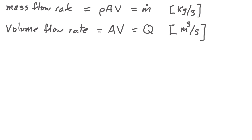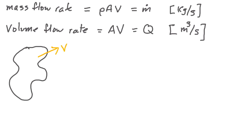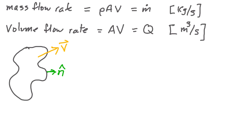Now I want to think about the volume flow rate passing through a surface, so let's think first of an arbitrary control volume. I can define everywhere on that control volume a unit outward-facing normal vector — unit meaning it has a magnitude of one, and normal meaning it's everywhere perpendicular to that surface. If I want to look at the flow passing through the surface, I have to find the component of the velocity which is perpendicular to the surface.